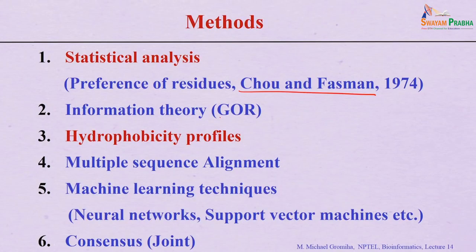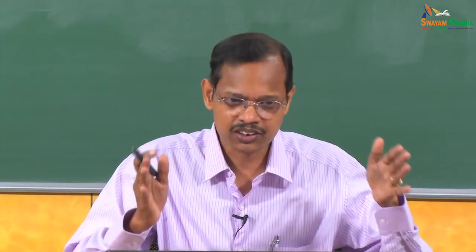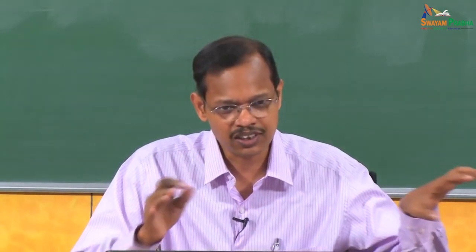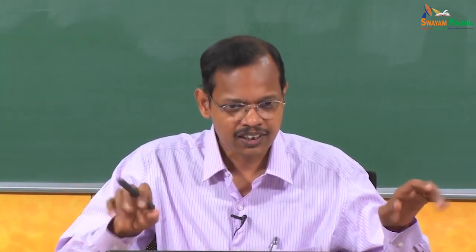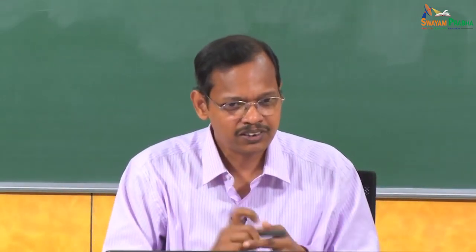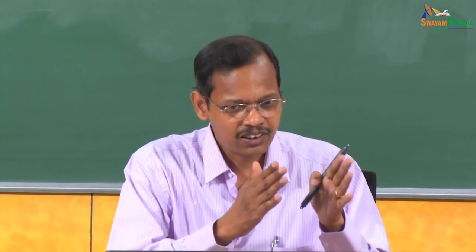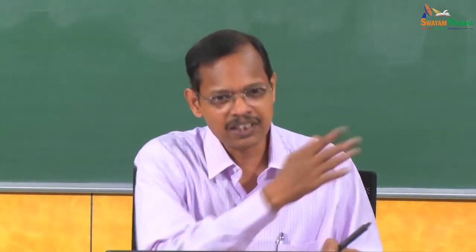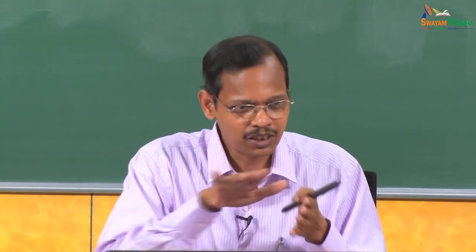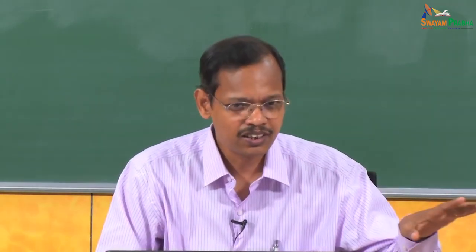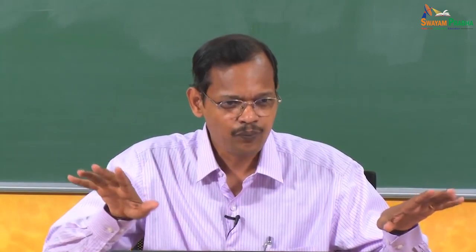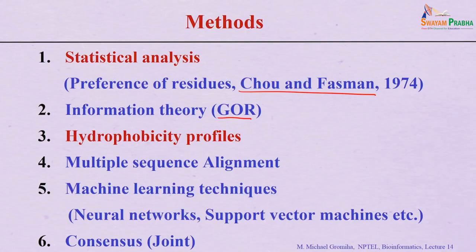Garnier's group developed a method called GOR, based on information theory. Rather than considering only the central residue, they used a window of 17 residues — 8 on the left and 8 on the right — gathering information from all residues in the window. This means that the same segment can be assigned to different secondary structures depending on its neighboring residues, allowing discrimination that a single-residue approach cannot achieve.